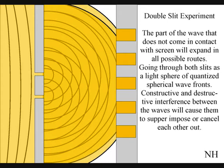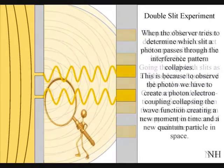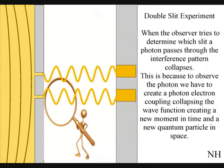When the observer turns on a detector to determine which slit a photon passes through, the interference pattern collapses. This is because to observe the photon, we have to create a photon-electron coupling, collapsing each wave front into a new quantum particle that will have its own position in space and time.